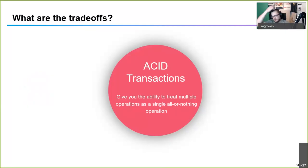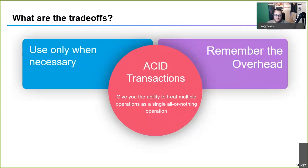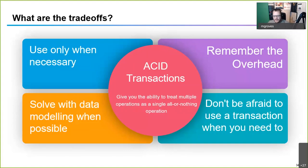A quick summary of the tradeoffs: ACID transactions give you the ability to treat multiple operations as a single all-or-nothing. Use only when necessary — don't use an ACID transaction if you don't need to, because there's overhead involved. Don't filter everything through a transaction just because it's convenient. Identify the areas where transactions are necessary and apply it there. Solve with data modeling when you can — aggregating into an aggregate root is always faster with less overhead. But don't be afraid to use a transaction when you need it. That's why there are tools and safety nets — just don't assume you need transactions everywhere.